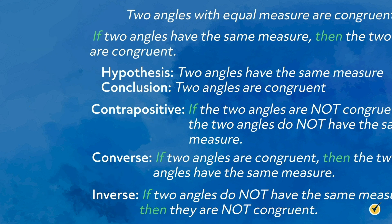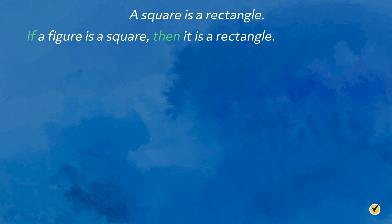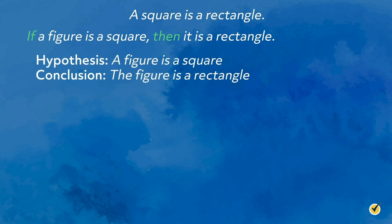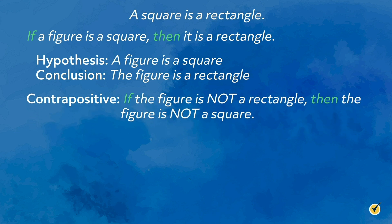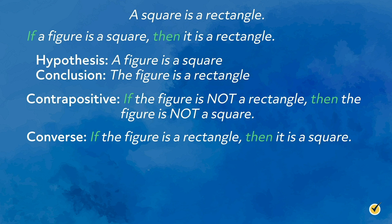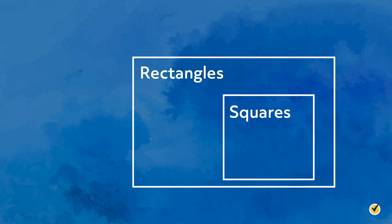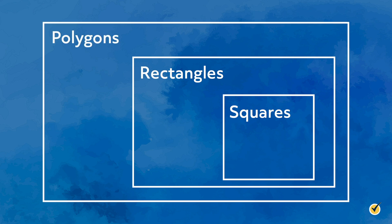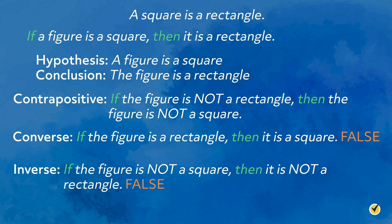Here is another example of a true statement: 'A square is a rectangle.' The conditional statement would be: 'If a figure is a square, then it is a rectangle.' Because the contrapositive is logically equivalent, we can assume 'if the figure is not a rectangle, then the figure is not a square' is also true. However, the converse — 'if the figure is a rectangle, then it is a square' — can be disproved. As seen in the diagram, a square is a special type of rectangle with four equal sides, but not all rectangles have four equal sides, so the converse is false. Accordingly, the inverse is also false. In summary, the original statement is logically equivalent to the contrapositive, and the converse is logically equivalent to the inverse.